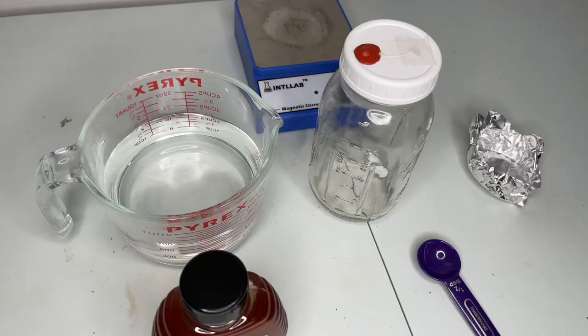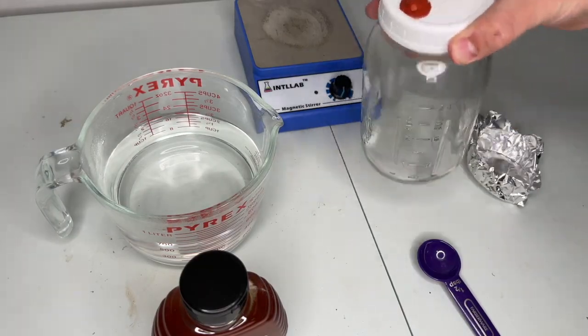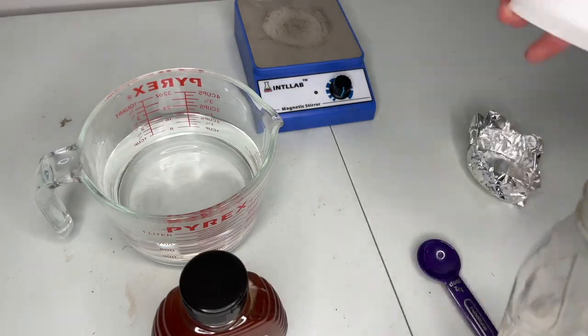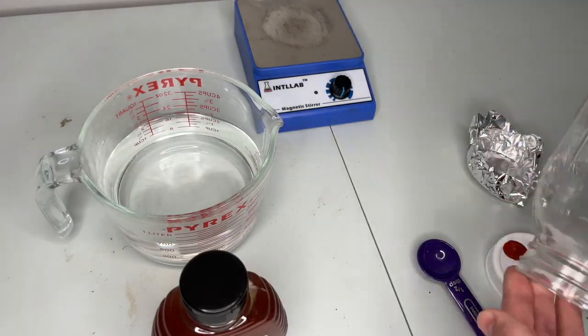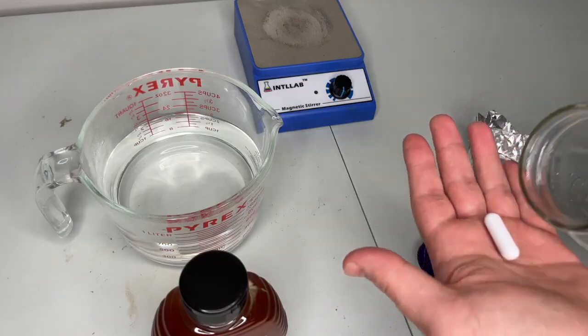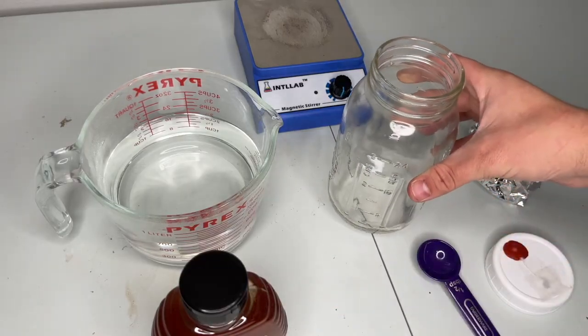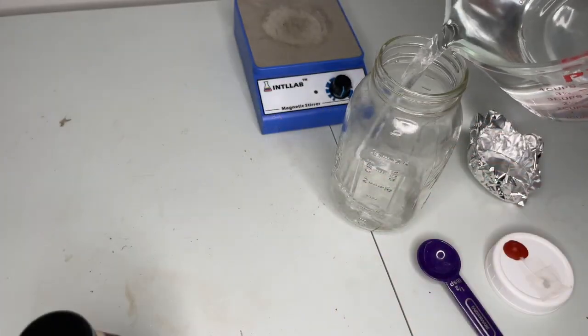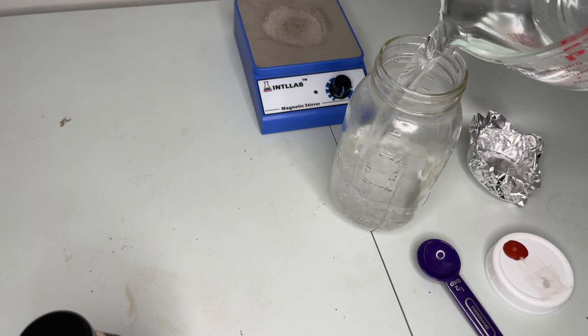The first step is to create a large amount of liquid culture. I like to use one tablespoon of honey dissolved into 600 milliliters of warm water. Using a magnetic stir bar is recommended to speed up the process.